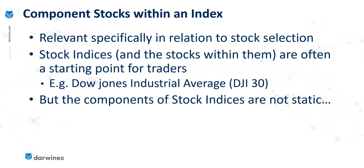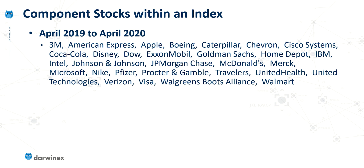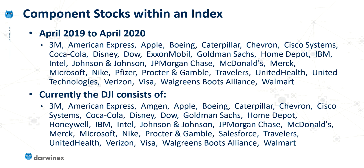Let's take a quick look at the Dow Jones. Between April 2019 and April 2020, these were the 30 stocks that made up the index. Comparing that to today, we can see that there are three stocks that were in the index between 2019 and 2020 that no longer form part of the index today — that's ExxonMobil, United Technologies and Pfizer. Those three companies have been replaced by three others: Amgen, Honeywell and Salesforce.com.